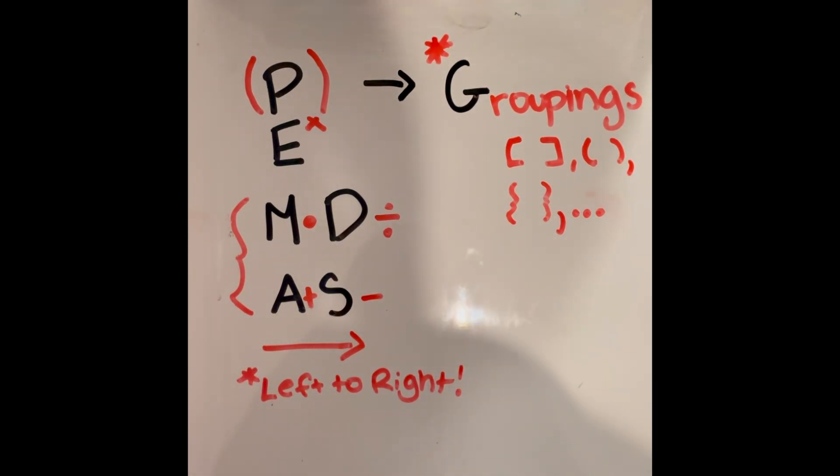All right, so today we're going to be talking about order of operations, in other words, PEMDAS. As you can see here, I've written out PEMDAS. PEMDAS is an acronym that stands for parentheses, exponents, multiplication and division, addition and subtraction.